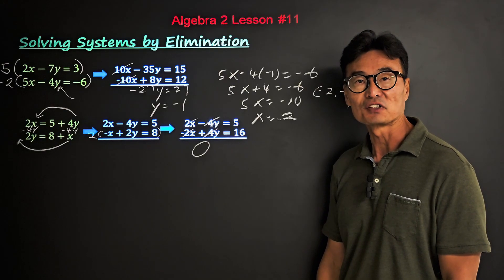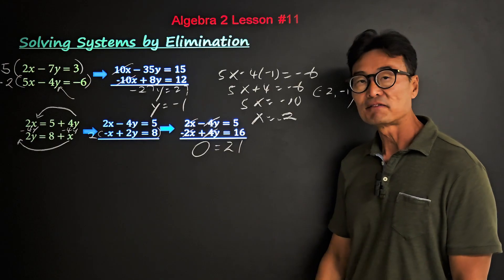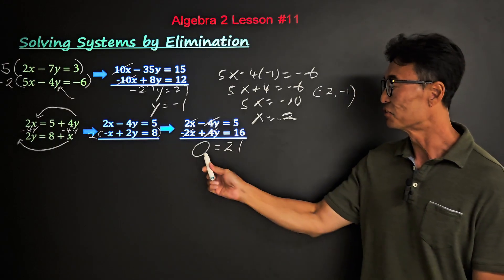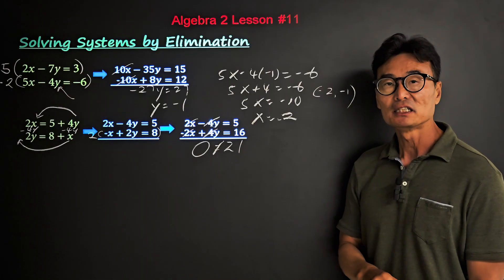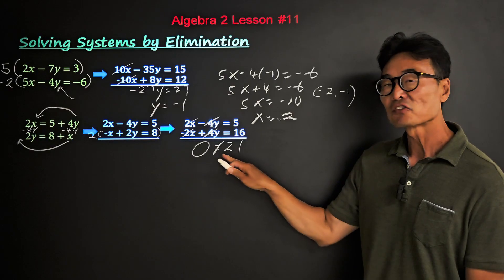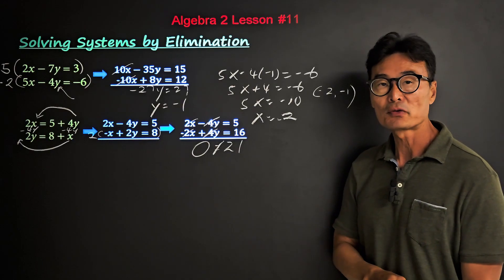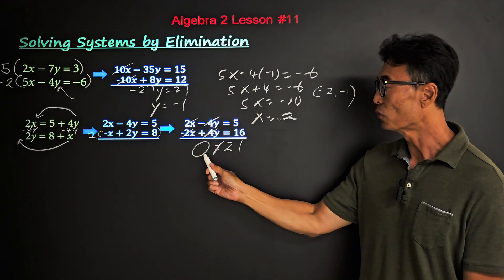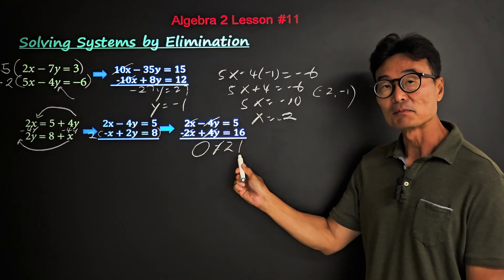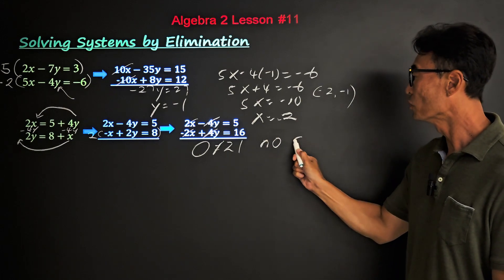This leaves 0 on the left side and 21 on the right side. Since 0 does not equal 21, and all variables have cancelled out, the answer is no solution.